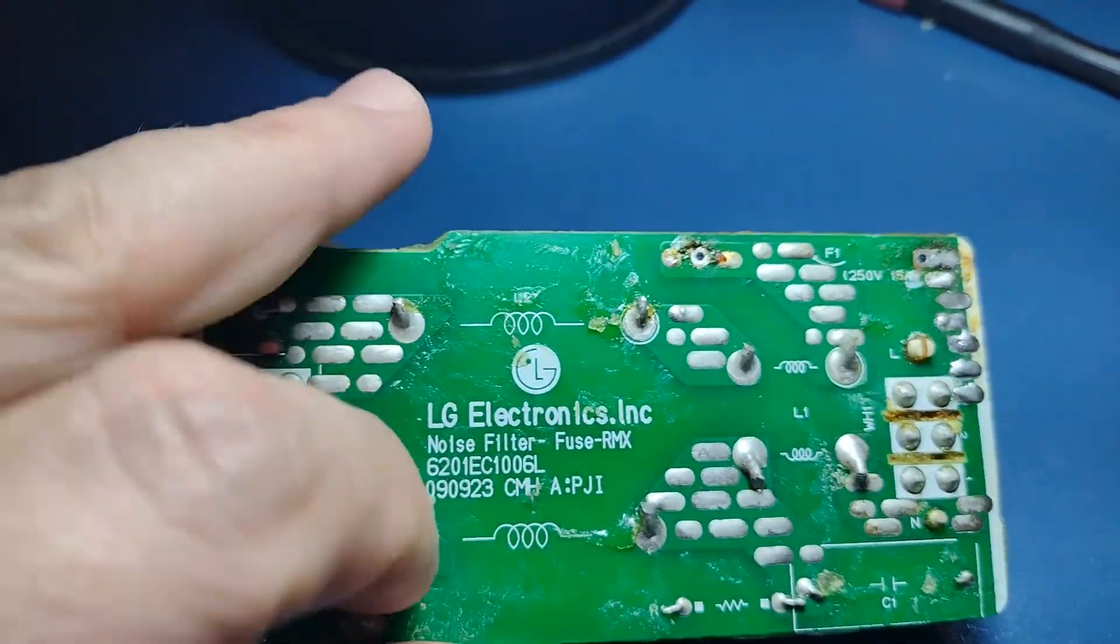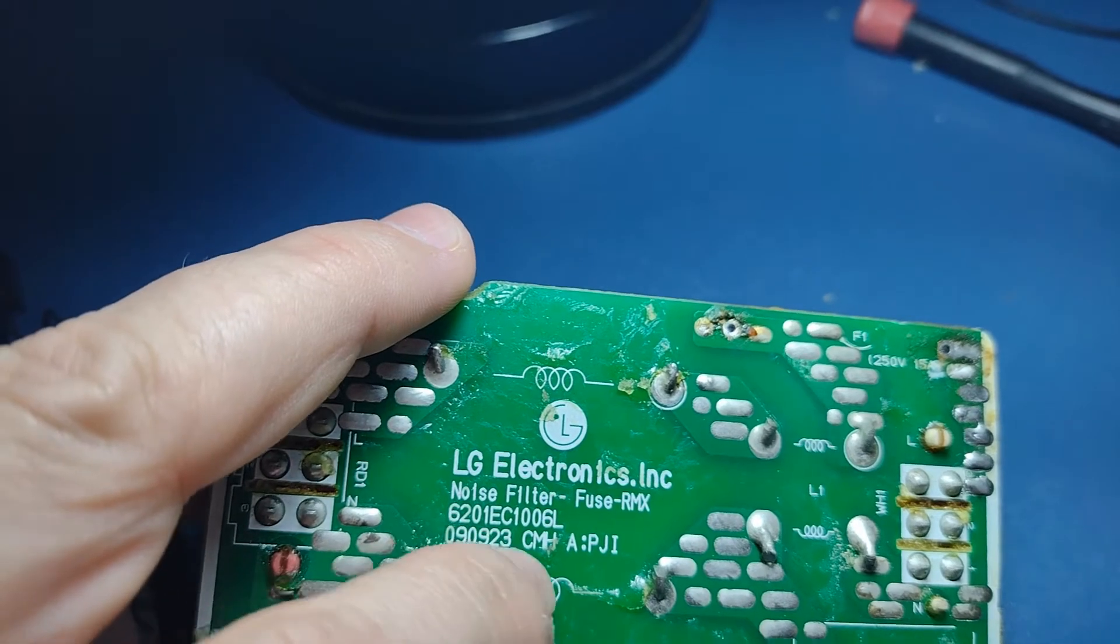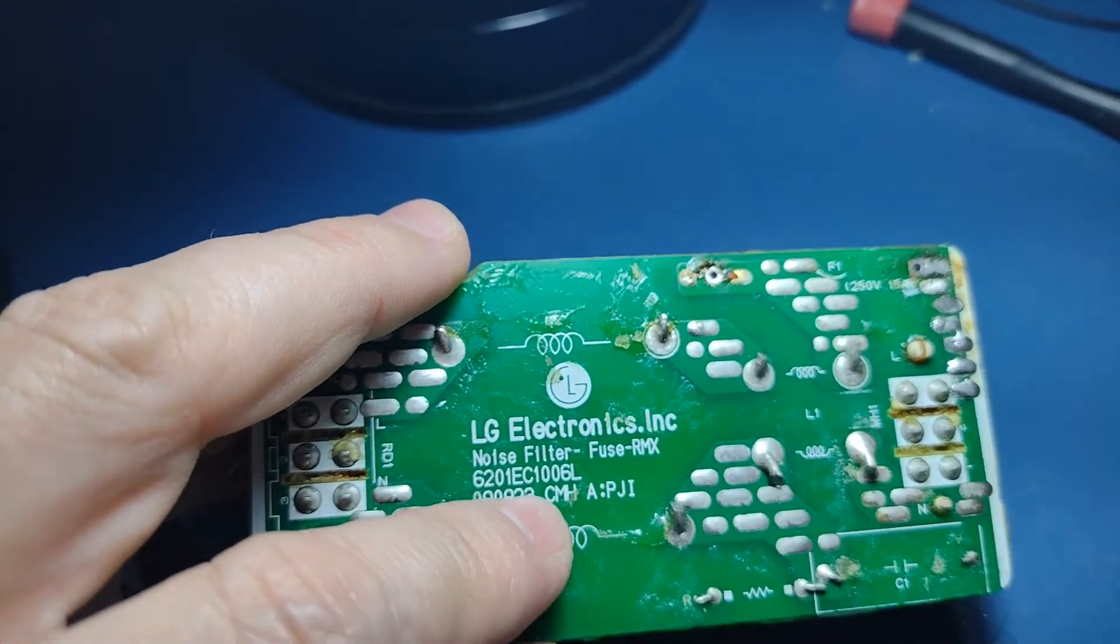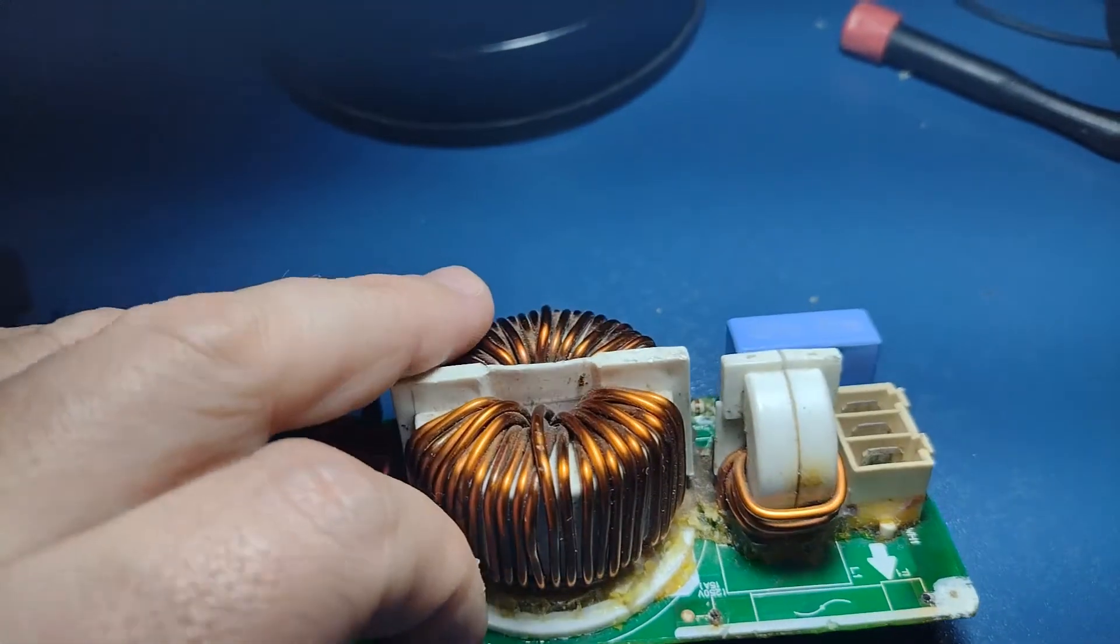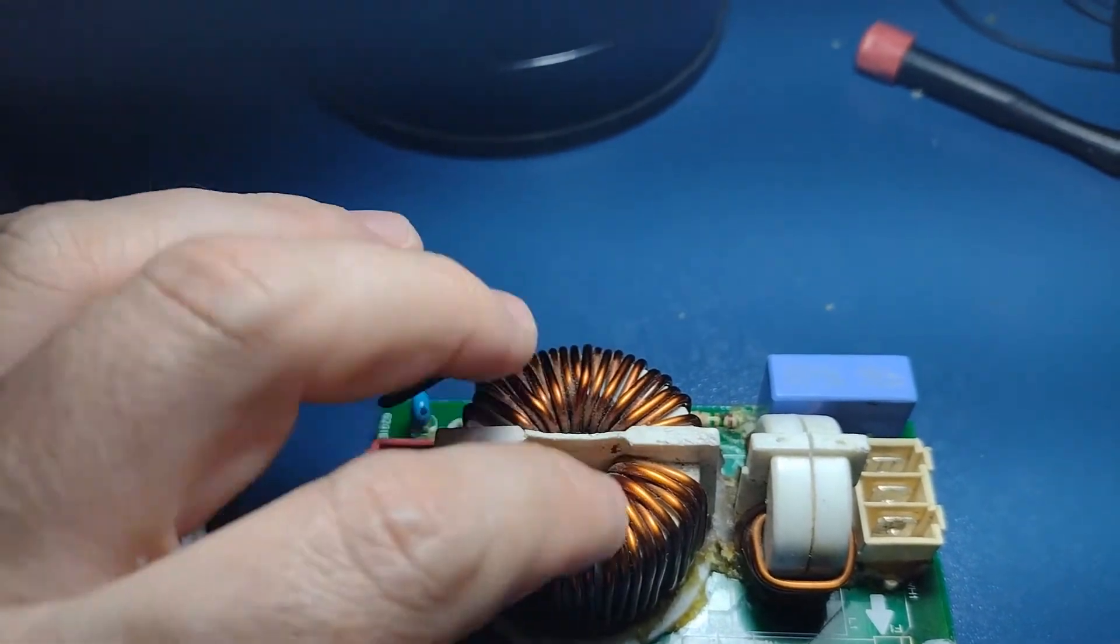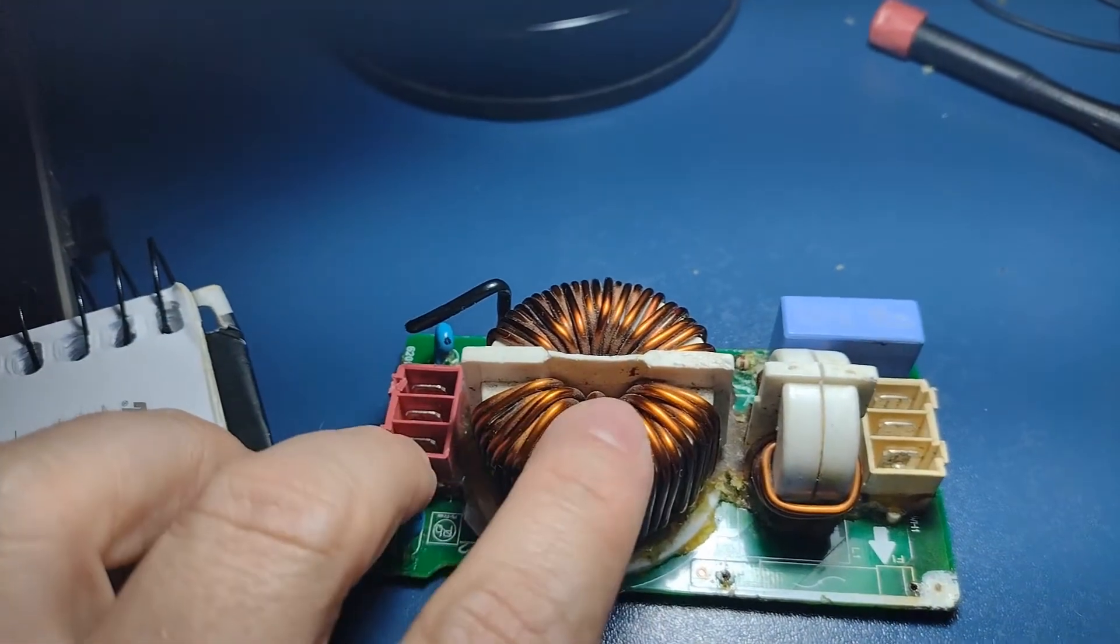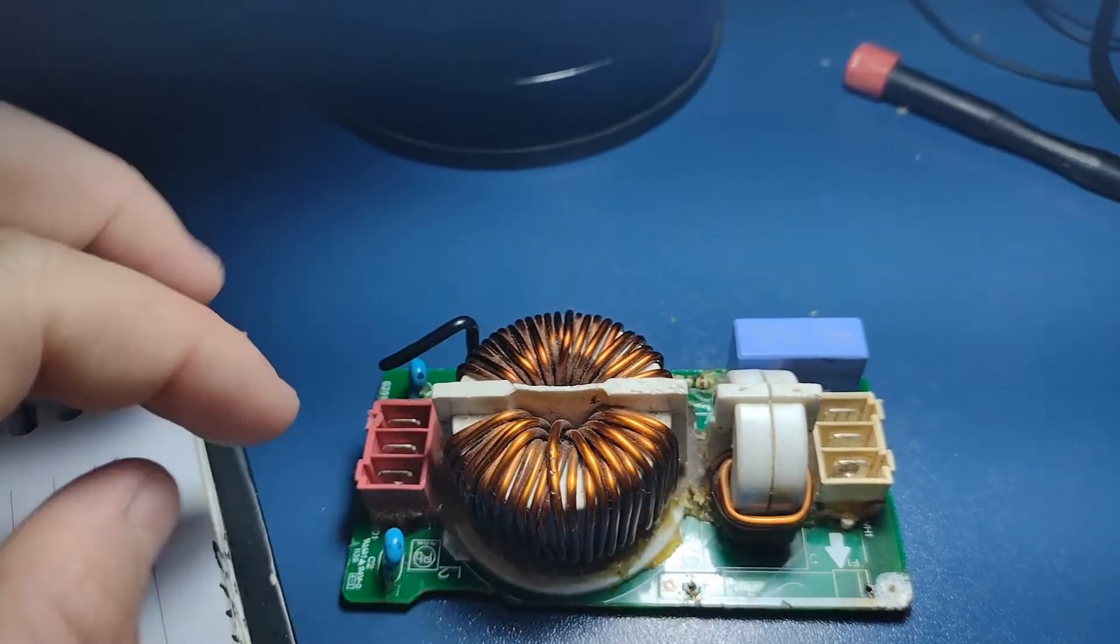Here you can see the part number of the filter. And after I will show you the schematic with the filter. It's only put in series with the machine on the entrance of the line.